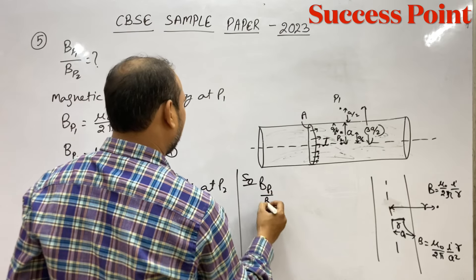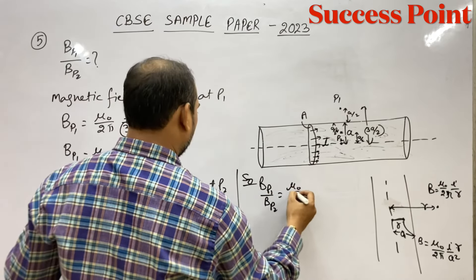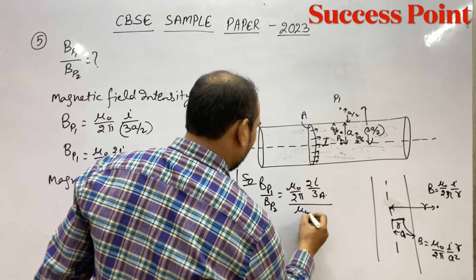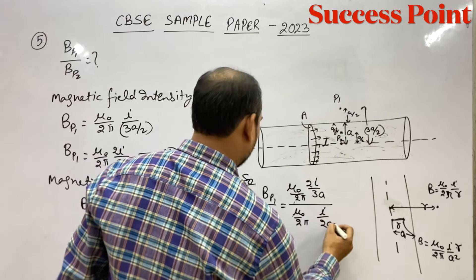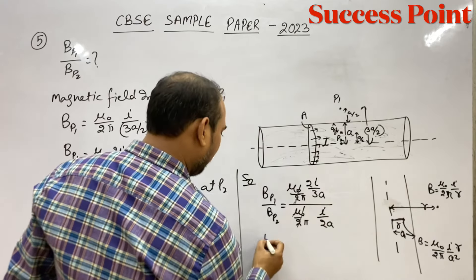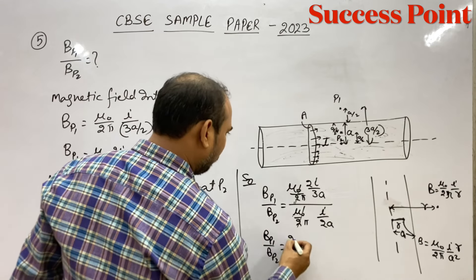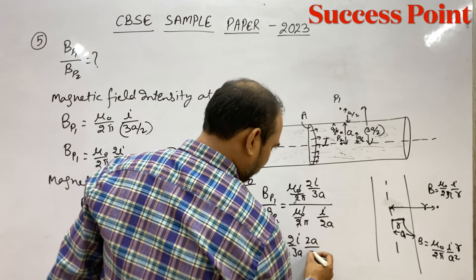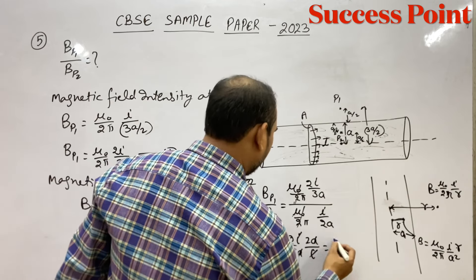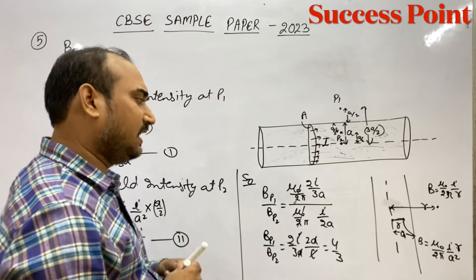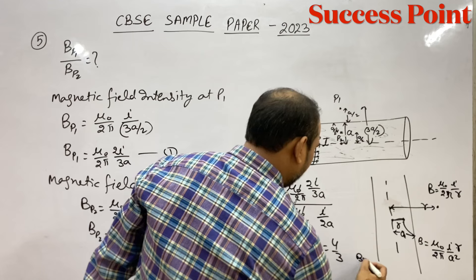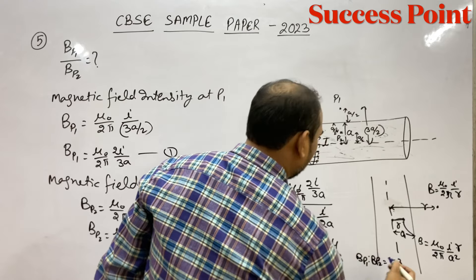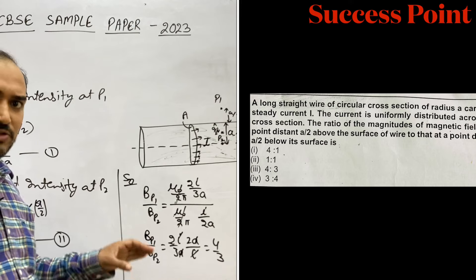तो BP1 upon BP2 निकालते हैं। ऊपर रखेंगे (μ₀/2π) · (2I/3A) और नीचे रखेंगे (μ₀/2π) · (I/2A)। μ₀/2π cancel हो जाएगा। BP1/BP2 = (2I/3A) × (2A/I) = 4/3। So the ratio of magnetic field is 4 is to 3 — यह option number 3 है, so third option will be correct.